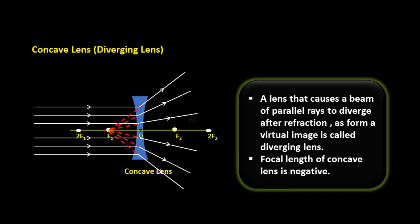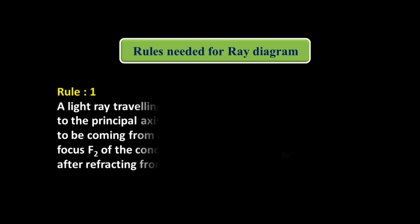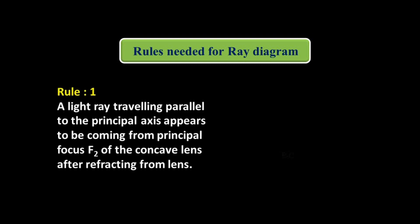The Focal Length of a Diverging Lens is negative. Some rules have to be followed for the construction of Ray Diagram. Rule number 1: A light ray traveling parallel to the Principal Axis appears to be coming from the Principal Focus F2 of the Concave Lens after refracting from the Lens.